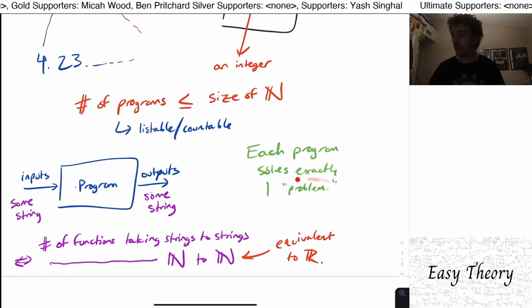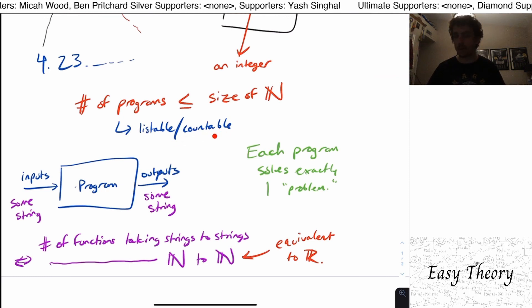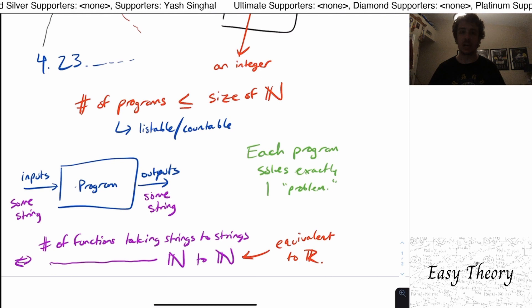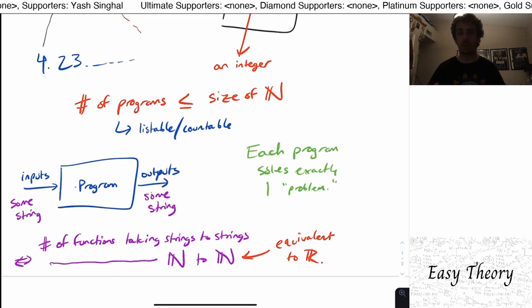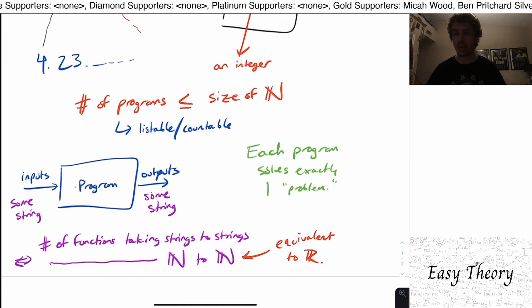So that means the number of problems that are solvable is countable. But the total number of possible problems is equivalent to the real numbers and hence is uncountable. So there must be some unsolvable problem according to this. Because the number of possible problems is uncountable. But the number of solvable problems is only countable.